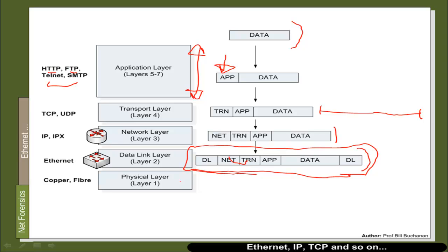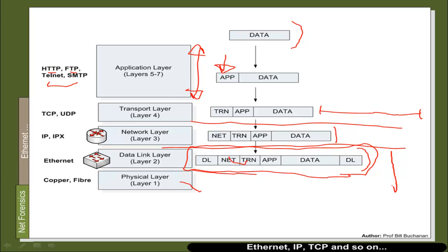Below the transport layer we have the network layer, which ensures delivery of data packets as they leave one host and arrive at the other. We encapsulate this network layer data packet by adding a header and a trailer, wrapping it inside a data frame. The most popular data frame is an Ethernet data frame, representing the data link layer, and then we transmit it using layer one. We can view traffic at different levels of abstraction: the Ethernet layer, the IP layer, or the TCP layer.